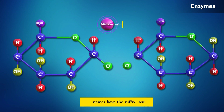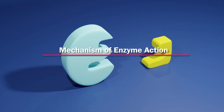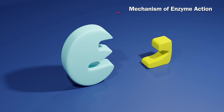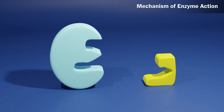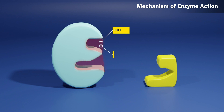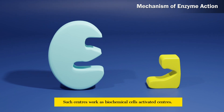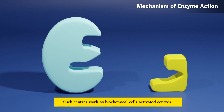Their names have the suffix '-ase'. Regarding the mechanism of enzyme action: enzymes act by the cavities of their outer surface. These cavities have -COOH and -SH groups, which work as biochemical active centers.